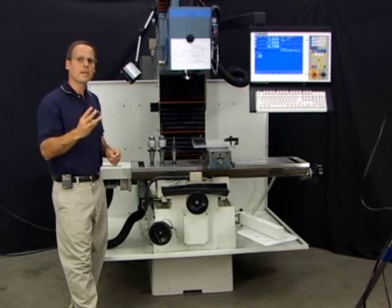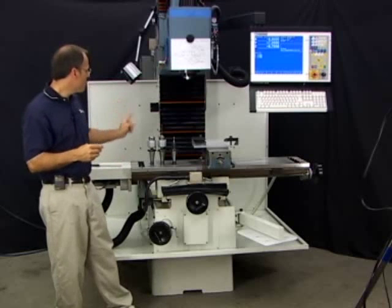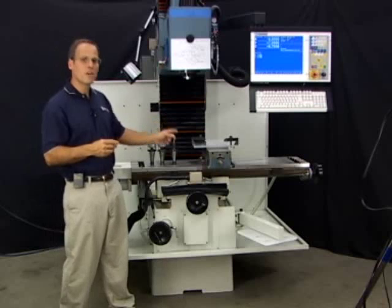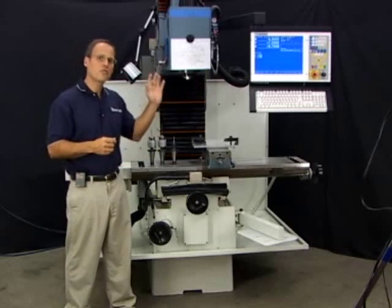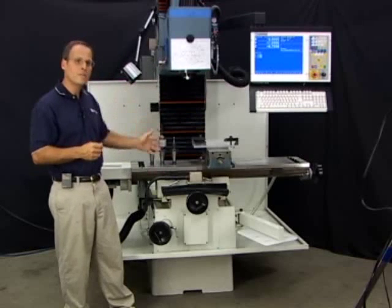Step number three. Step number three is measuring the length and diameters of these tools and getting it set up in the Centroid tool library so the control knows how long they are and what diameter they are.